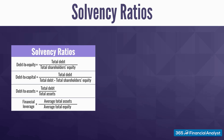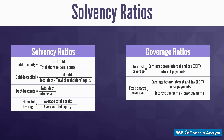Apart from these four gauges, solvency ratios also comprise some coverage metrics, such as interest and fixed charge coverage measures. You need the income statement of a company to process them.